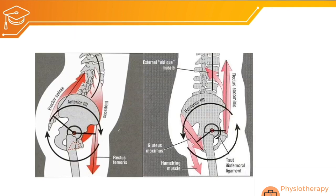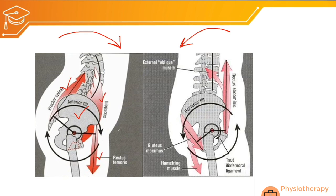The first section of lumbopelvic rhythm concerns pelvic bone movement. If the pelvic bone tilts anteriorly it is called anterior pelvic tilt; if it rotates posteriorly it is called posterior pelvic tilt. Anterior pelvic tilt is created by contraction of the iliopsoas, rectus femoris, and erector spinae muscles. Posterior pelvic tilt is created by contraction of gluteus maximus, hamstrings, and rectus abdominis.